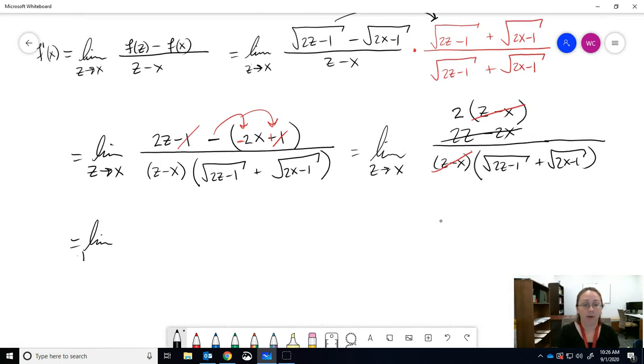Now we can take the limit. Let me rewrite it so we can see what we're doing. So we have on top just a 2. On the bottom, just the conjugate we created. Copy it over. And let's take the limit.